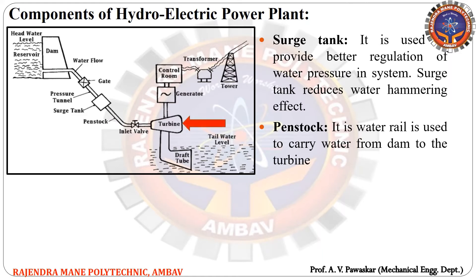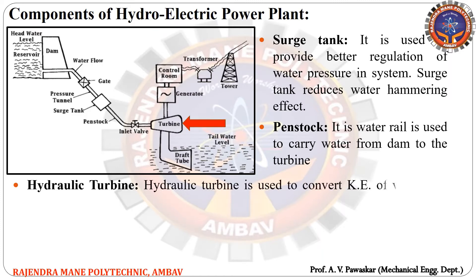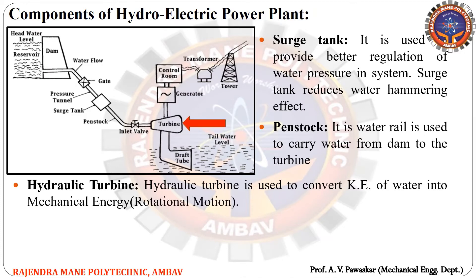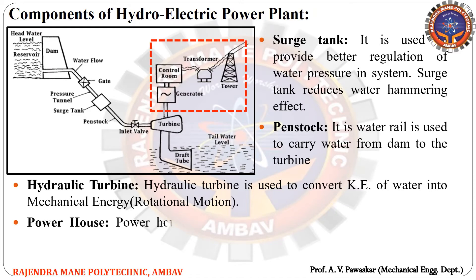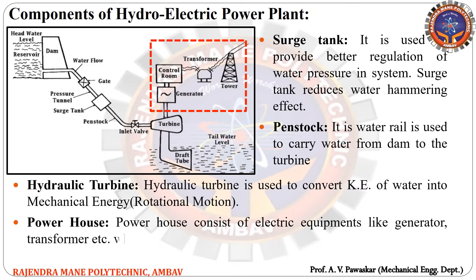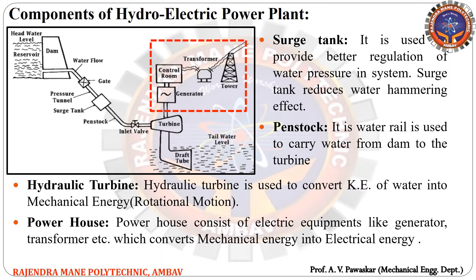The next component is the hydraulic turbine — it is used to convert kinetic energy of water into mechanical energy. The next component is the powerhouse — it consists of electrical equipment like the generator, transformer, etc., which convert mechanical energy into electrical energy.